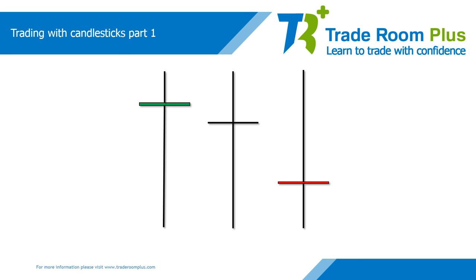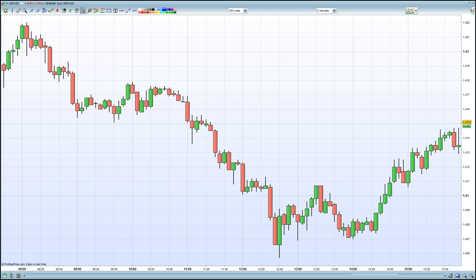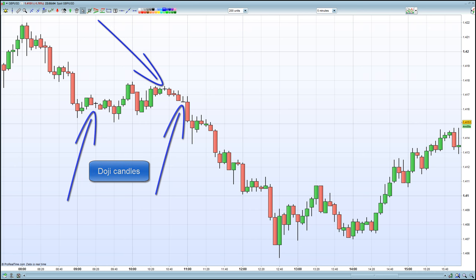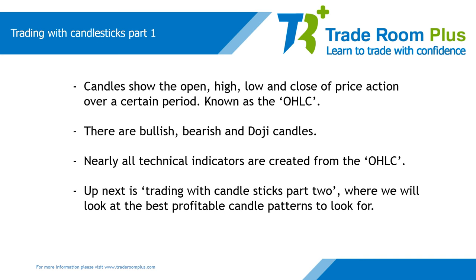We will look at further candlestick patterns in the next candlestick video. Looking back at the chart from where we started, we can see that all the information is based around price action — some bullish candles showing the market increasing in price, some bearish candles showing the market falling in price, and some doji candles we can identify. To summarize: candles show the open, high, low and close of price action over a certain period, known as the OHLC. There are bullish, bearish and doji candles, and nearly all technical indicators are created from the OHLC. Up next is Trading with Candlesticks Part 2, where we will look at the best profitable candle patterns to look for.